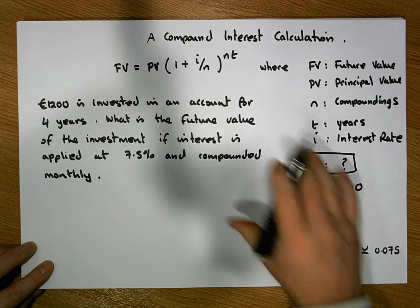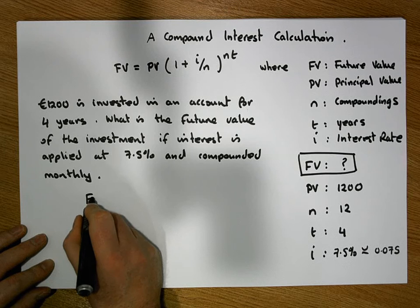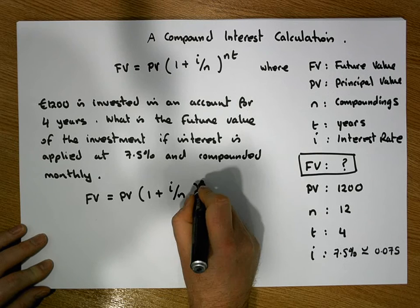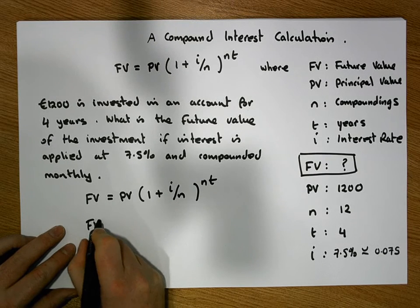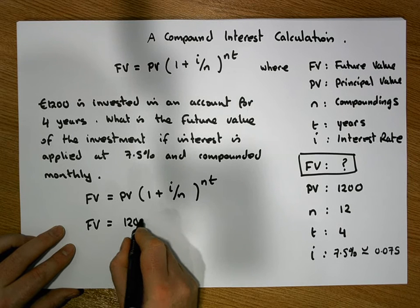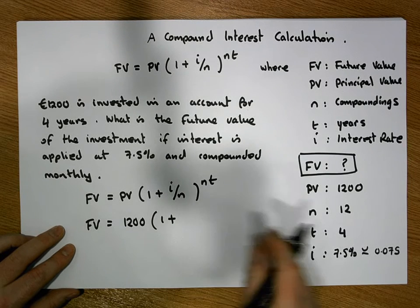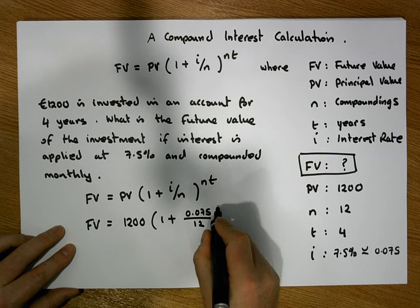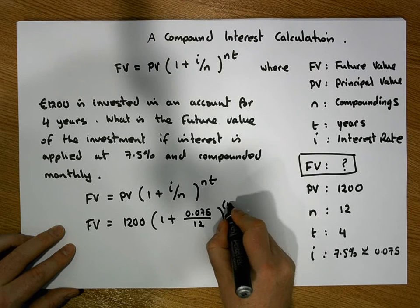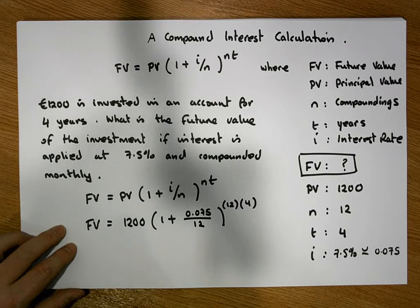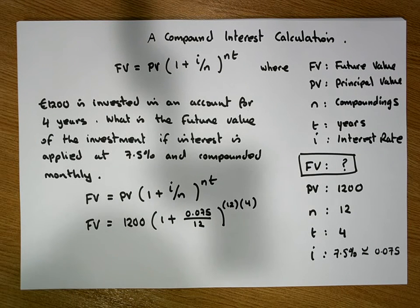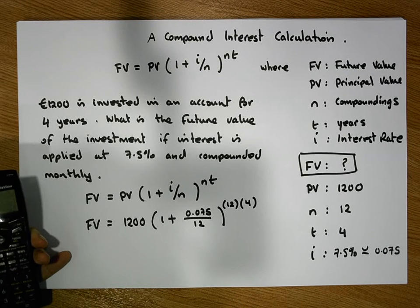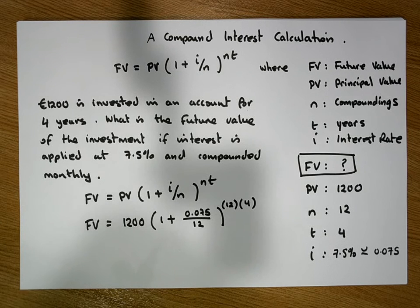Let's substitute everything into our formula. The future value equals the principal value times 1 plus i over n, raised to the power of n times t. Substituting in, the future value equals 1200 times 1 plus 0.075 divided by 12, raised to the power of 12 times 4. Let's do the division first: 0.075 divided by 12 gives us 0.00625.